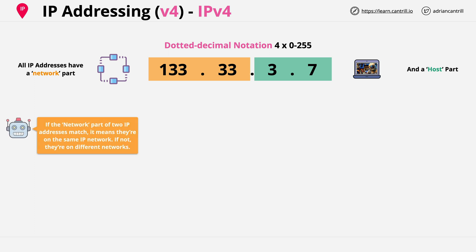If the network part of the IP address matches between two different IP addresses then they're on the same IP network. If not, they're on different IP networks. So you need to be able to calculate for a given IP address which part of that address is the network and which part is for hosts — and by the end of this lesson you will know how to do that.